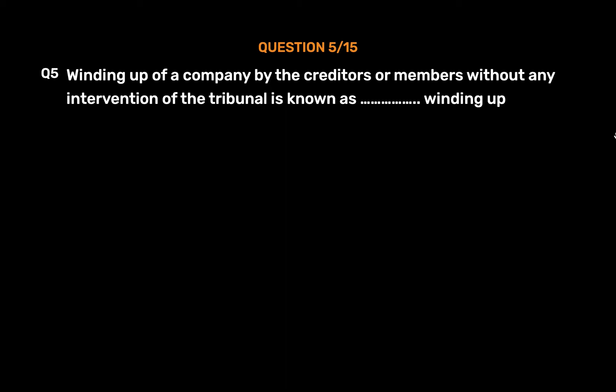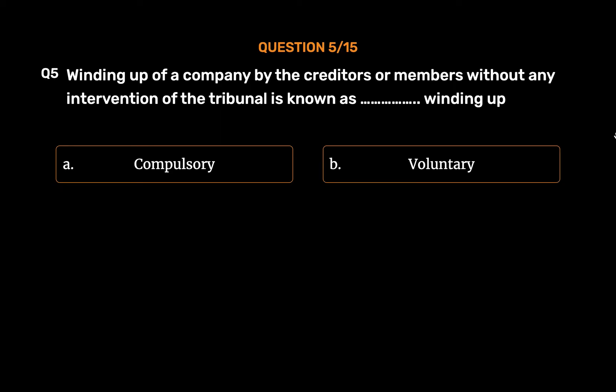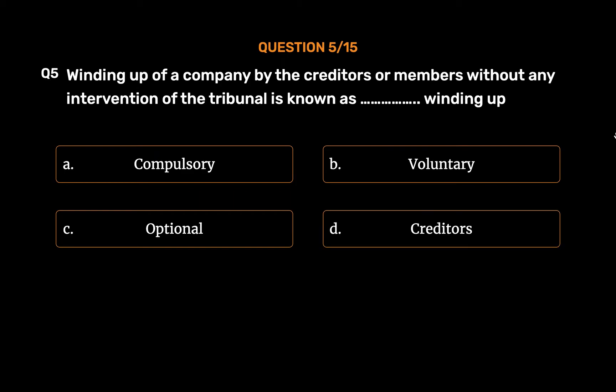Question number 5. Winding up of a company by the creditors or members without any intervention of the tribunal is known as which type of Winding up? Option A: Compulsory. Option B: Voluntary. Option C: Optional. Option D: Creditors. The correct answer is Option B — Voluntary.